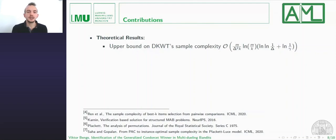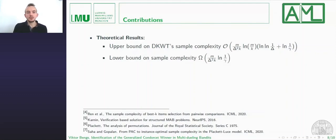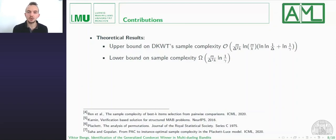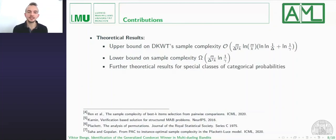With this, we can analyze the sample complexity of the Dvoretzky-Kiefer-Wolfowitz tournament. The worst-case sample complexity is of the order given here. We also derive a lower bound for any approach in this setting, and we see that our approach's sample complexity matches the lower bound up to logarithmic terms — so it is nearly optimal. We also have further theoretical results of this kind for special classes of interest in our setting.